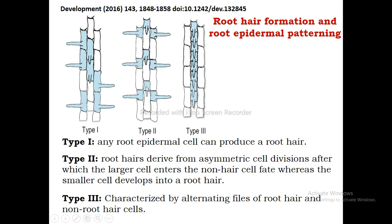In type 2, the last division is asymmetric: the larger cell will become the hairless cell and the smaller cell will become a cell with a root hair. So in type 1 there is no asymmetric division and any cell can become a root hair cell, whereas in type 2 asymmetric division occurs and the smaller cell develops into a root hair cell.